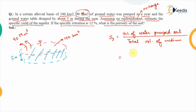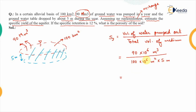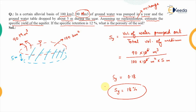The volume of water pumped out is 90 million cubic meters, that is 90×10⁶ cubic meters, divided by the total volume of the aquifer: 100 square kilometers, converting to meters that is 100×10⁶ square meters, multiplied by the 5 meter depth. The 10⁶ cancels out, giving specific yield = 0.18, or 18%.